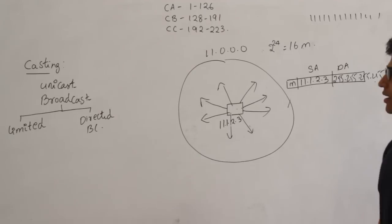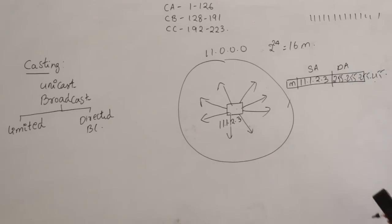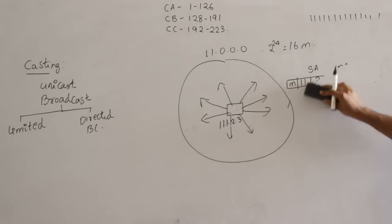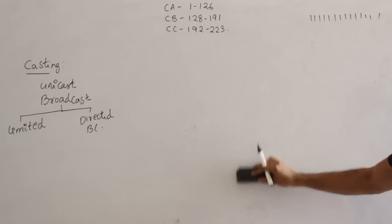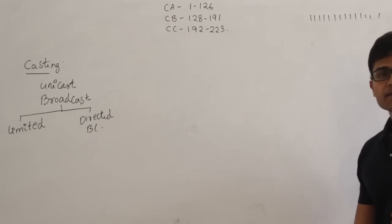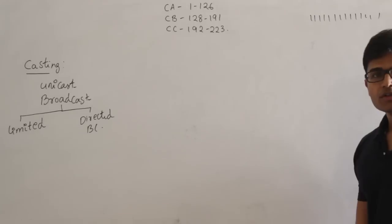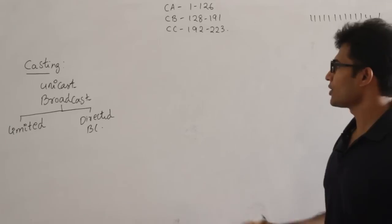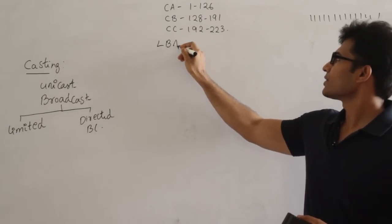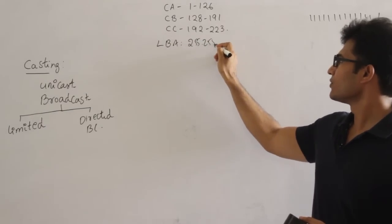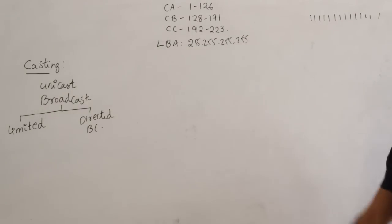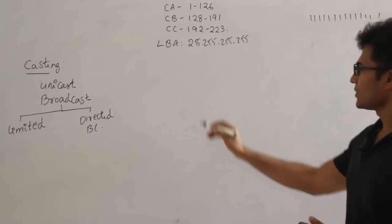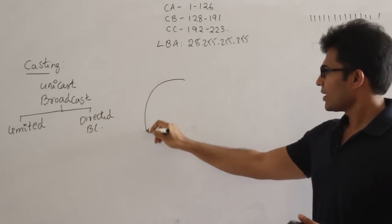Limited broadcasting means a host sends a message to all other hosts in the same network. Therefore the address 255.255.255.255 is reserved and can never be assigned to any host, because it represents the limited broadcast address. This number carries a special meaning and must never be used as a host address.